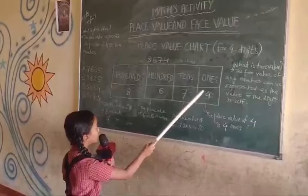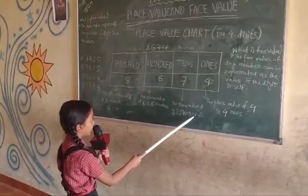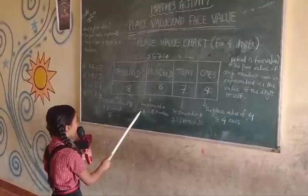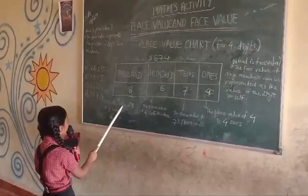the place value of 6 is 600. In the 1000's place, the place value of 8 is 8000.